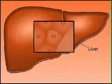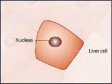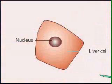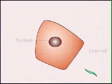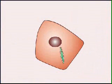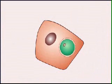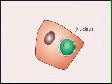A sporozoite enters a liver cell and begins to feed and grow. During the process, the parasite's nucleus divides many times, and then the nuclei bud off to produce thousands of new Plasmodium cells, now in a form called merozoites.